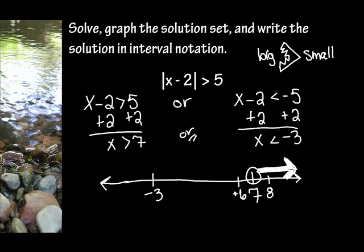So let's graph the other one. Here I'll have negative 4 and negative 2. Now x is less than negative 3. Using the alligator idea, the alligator is eating the bigger number, which is negative 3, so we want x to be smaller than negative 3. Is negative 2 smaller than negative 3? No — it's actually bigger. Negative 4 is smaller than negative 3, so I know that's the direction I want to go. Make this really dark. You noticed I used an open circle for both because it's not equal to that number.